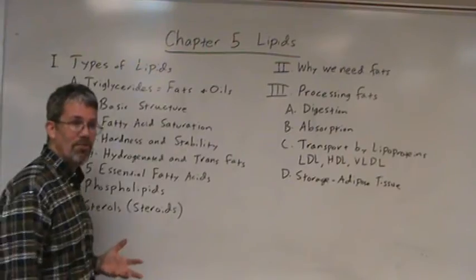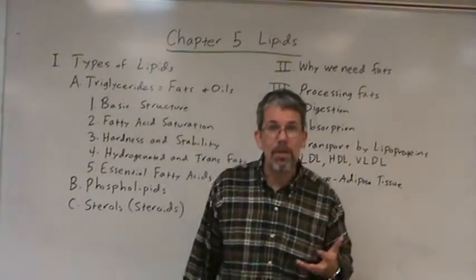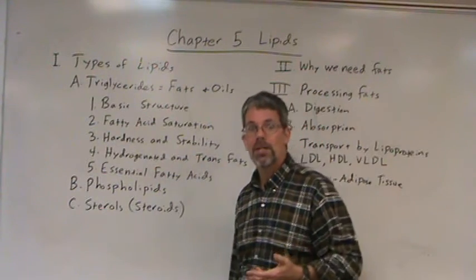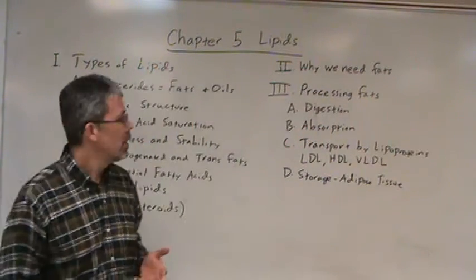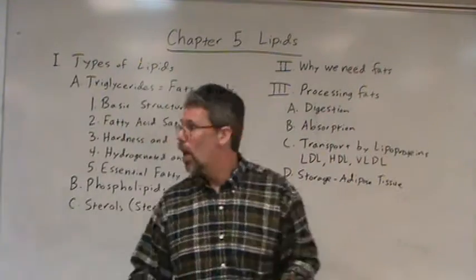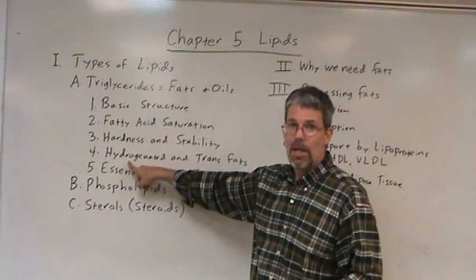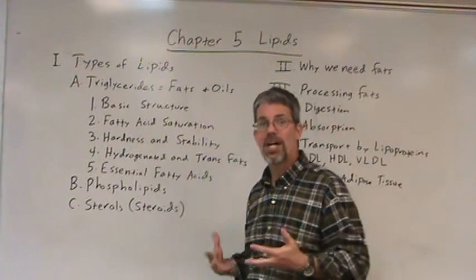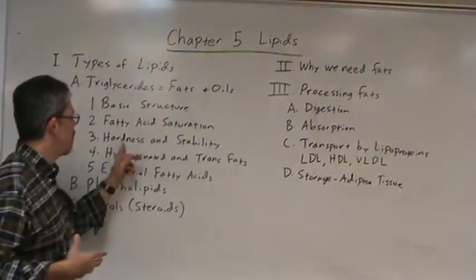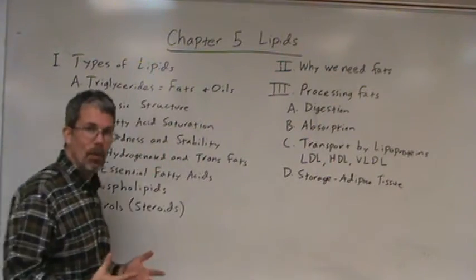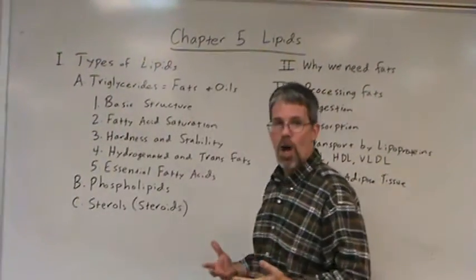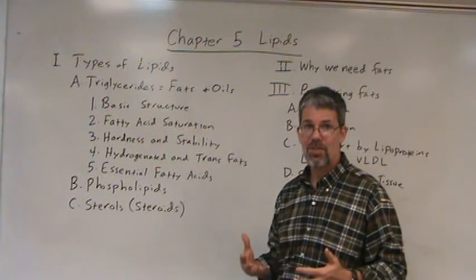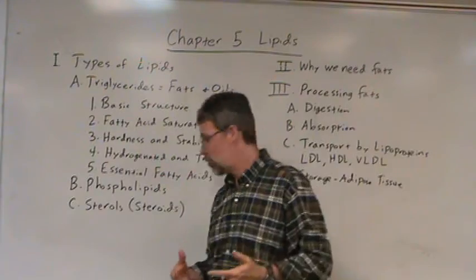Another rule of thumb: saturated fats tend to be more stable — chemically stable — with better shelf life, and they hold up better under repetitive or high heat cooking. For those reasons, for many years, oils have been hydrogenated. Hydrogenation means to add hydrogens back to an unsaturated fat to make it more saturated in order to thicken it up or make it more heat stable. But there are two drawbacks: saturated fats are less healthy, and trans fats often are a byproduct of hydrogenation.